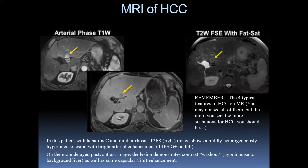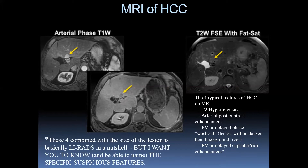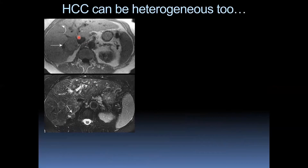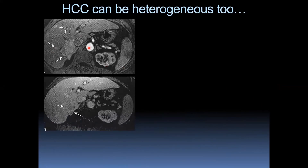Remember the four typical features of hepatocellular carcinoma on MR — you may not see all of them, but the more you see, the more suspicious you should be: T2 hyperintensity, arterial post-contrast enhancement, portal venous or delayed phase washout where the lesion becomes darker than the background liver, and portal venous or delayed capsular or rim enhancement. These four combined with lesion size is basically LI-RADS in a nutshell. HCC can also be heterogeneous, showing T1 hypointense lesion with heterogeneous T2 hyperintensity, arterial phase enhancement, washout, and capsular enhancement.